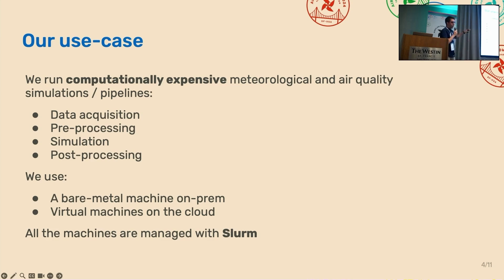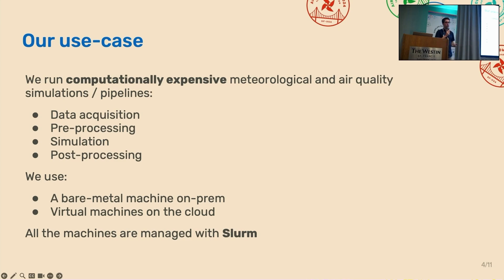In order to run this pipeline, we use a bare metal machine on-premise — it's an HPC. We also have some virtual machines on the cloud that help us run further simulations when the area or region we have to simulate is huge. The bare metal machine on-premise and the virtual machines are all managed by Slurm, which is an open source software and is actually the standard in scientific computing. Basically, if you go to any supercomputing center, you will see that it uses Slurm.